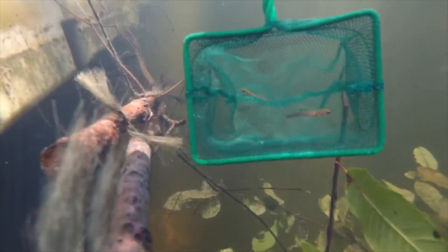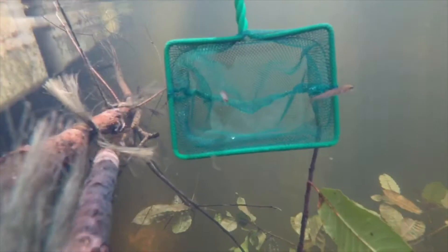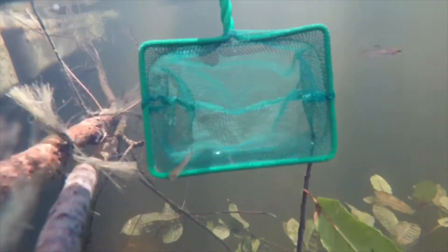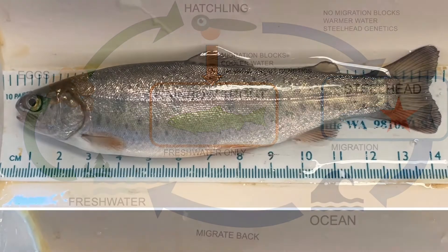This is a video of trout in the classroom trout being released into Lake Le Monde. Aren't you lowkey super proud of them? These fish have no access to the ocean, so they will for sure be rainbow trout, but steelhead start off just like this too. Whether a hatchling will become a rainbow trout or steelhead depends on lots of things, like if the hatchling can actually migrate or not, water temperature, and also genetics.